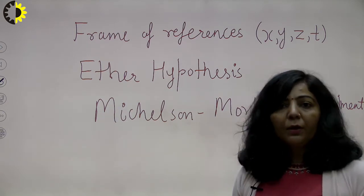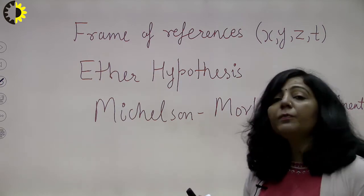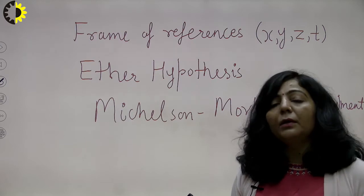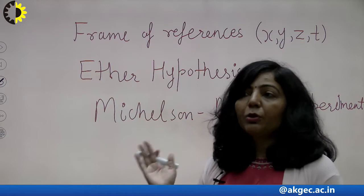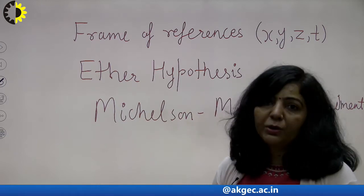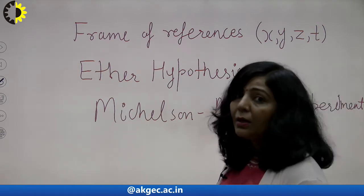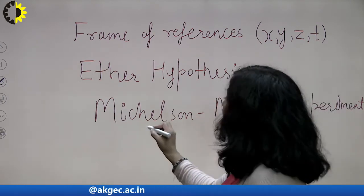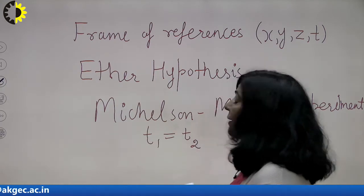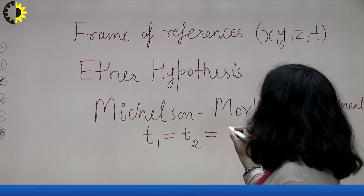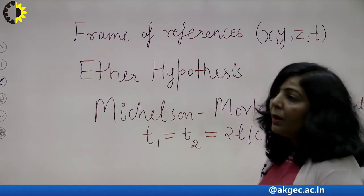The experiment was performed in three steps. In step one, the apparatus was assumed to be at complete rest — at rest in the ether frame. In that case, the time taken by the two light rays, since the experiment uses an interferometer based on the phenomenon of interference, t1 and t2 — the times taken by reflected and transmitted rays to travel the round trip — were both equal to 2l/c.